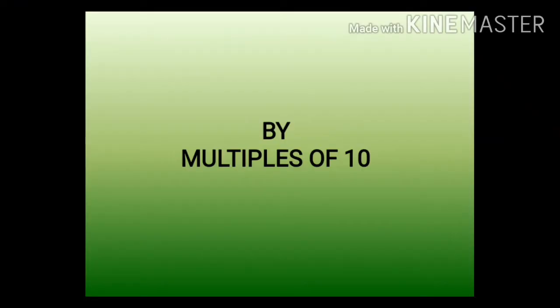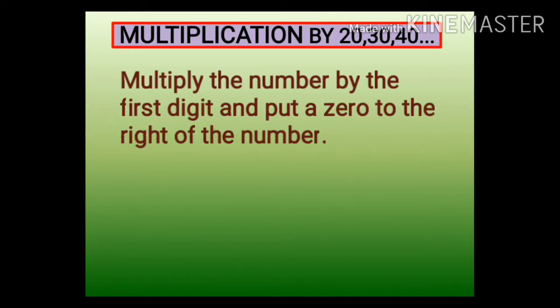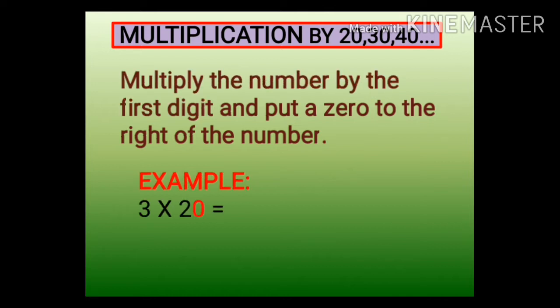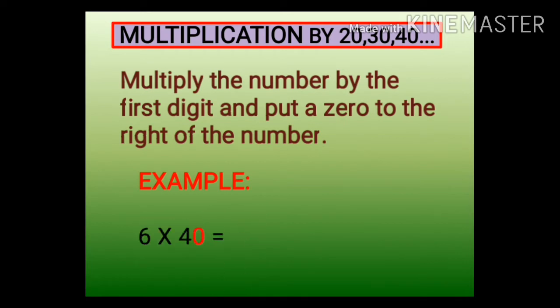To multiply a number by multiples of 10 — that is, multiplication by 20, 30, 40 — we have to multiply the number by the first digit and put a zero to the right of the number. For example, 6 into 40: 6 into 4 is just 24, then place the zero to the right.